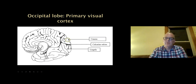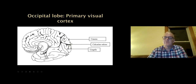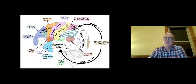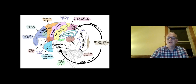The occipital lobe has primary visual cortex around the calcarine sulcus. In this lecture, we'll talk about visual processing and how other areas of the brain help you to interpret the vision that you see. Here's a nice drawing that a fourth-year student completed — this would be a good one to go back at the end of the lecture and review, making sure you're familiar with all of these areas.